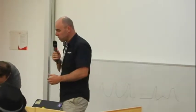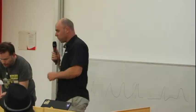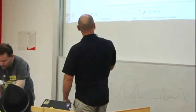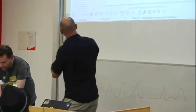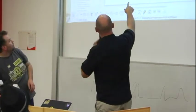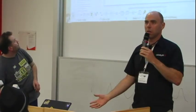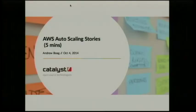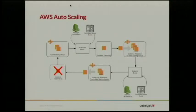My talk is around AWS autoscaling and some stories around that. I just want to give you a couple of examples of things we've done with it and some challenges we've found. Autoscaling is essentially your ability to scale out horizontally the machines you're using — in the traditional way where you'd have multiple front ends sitting in front of one database server.